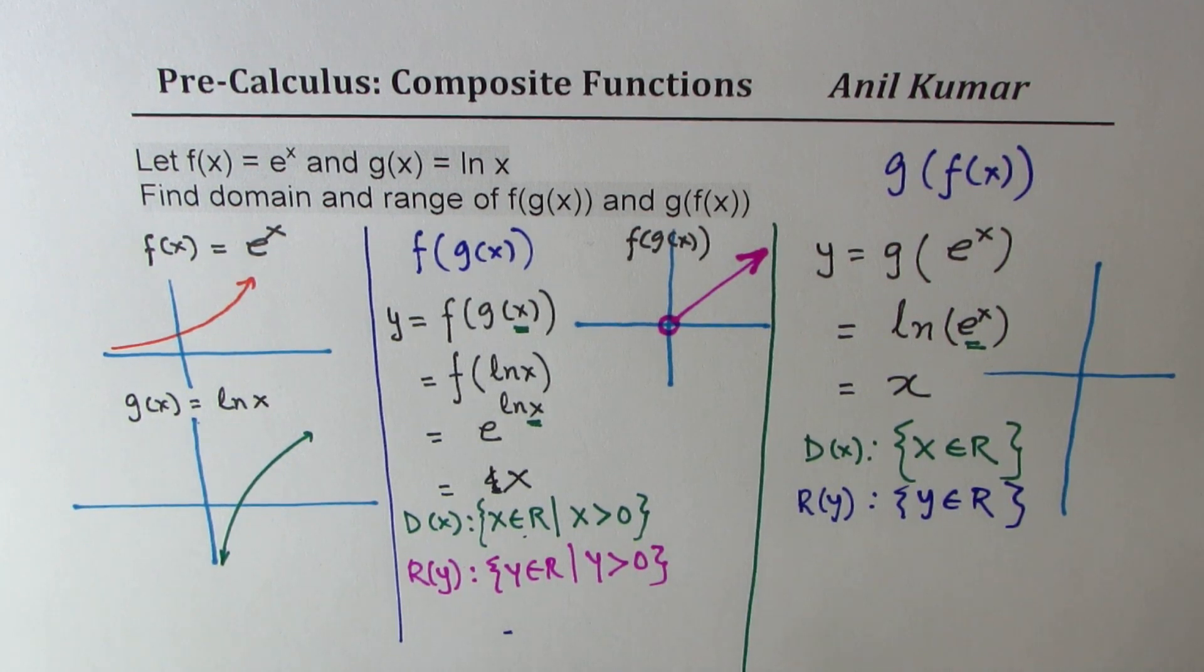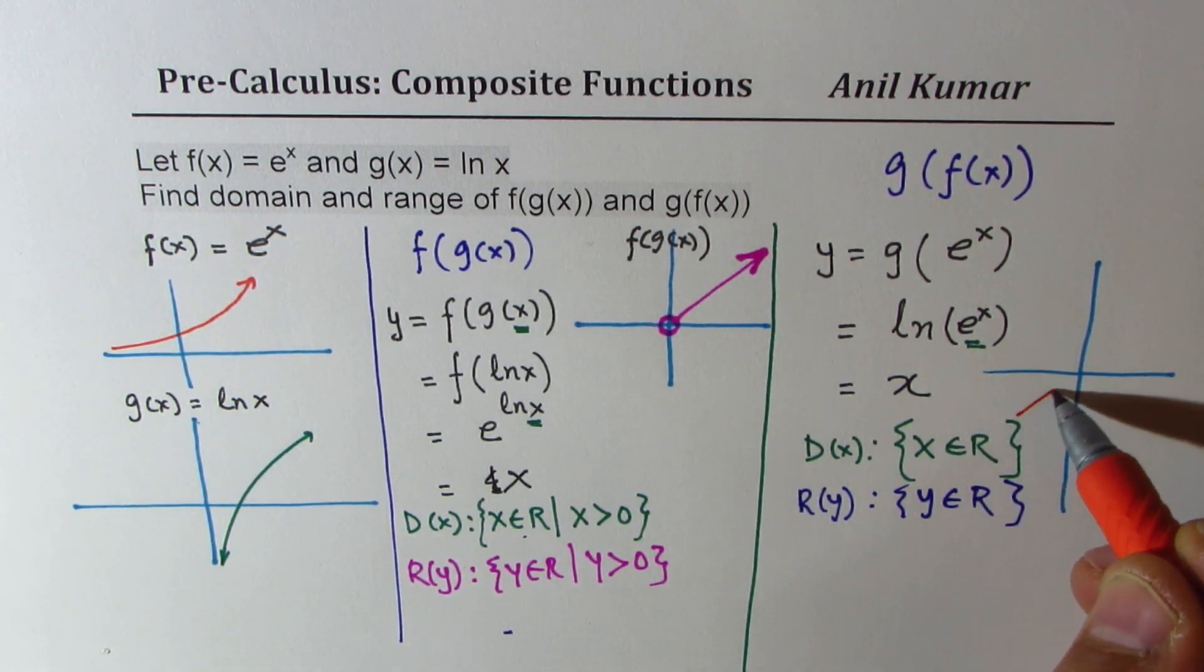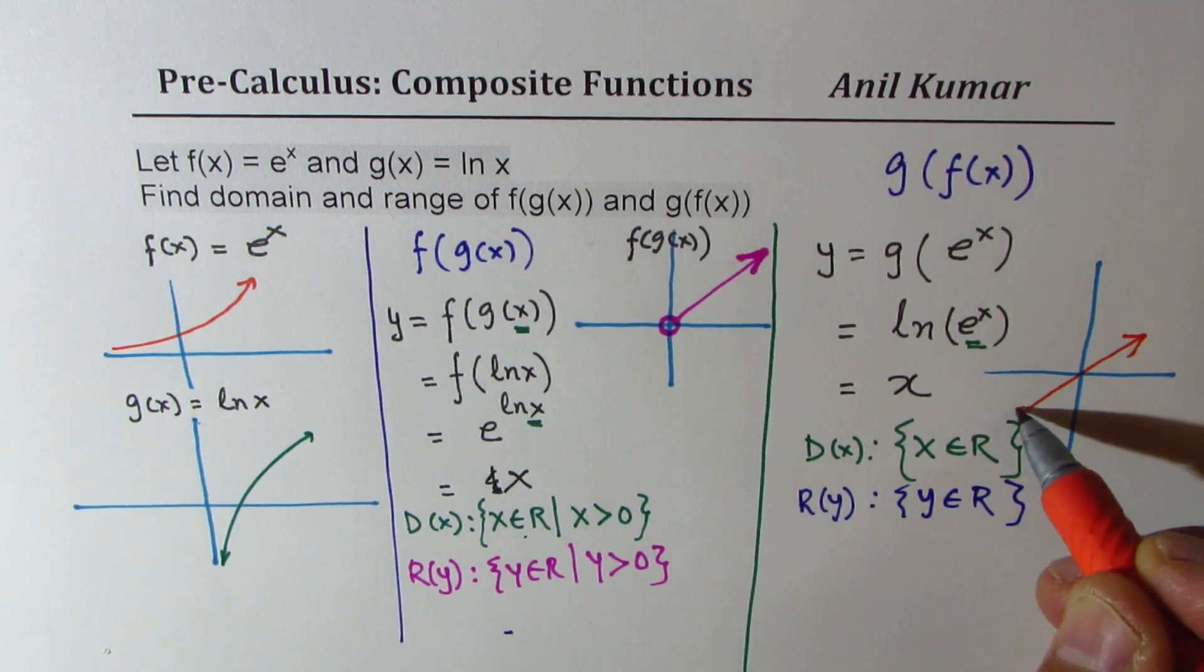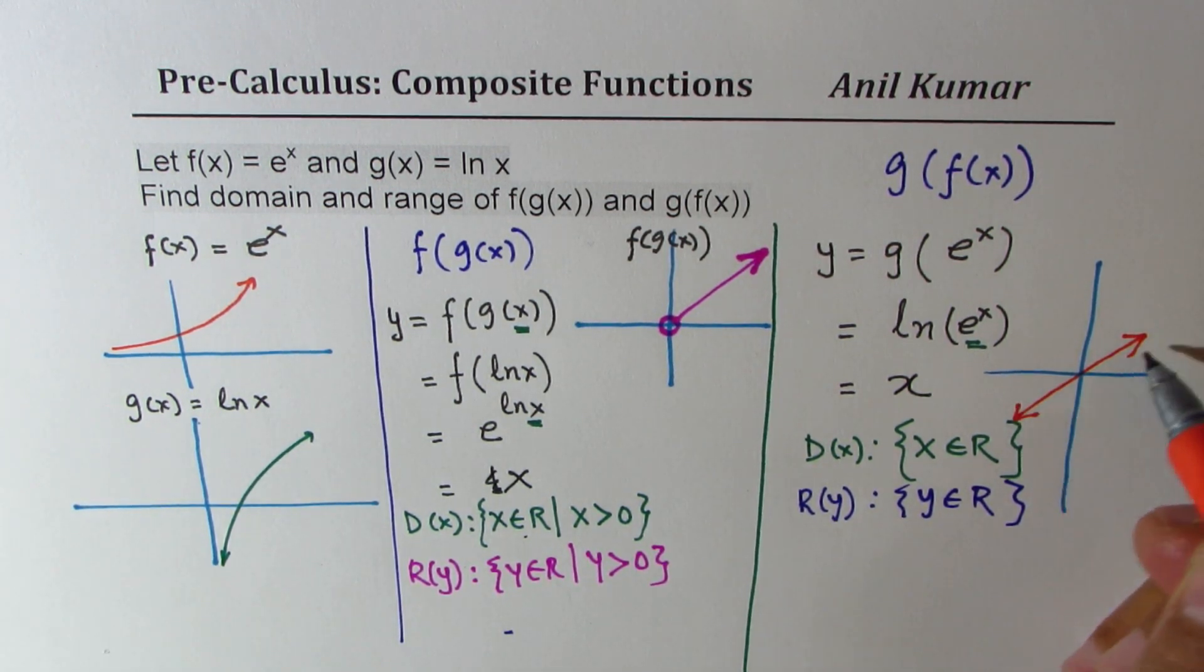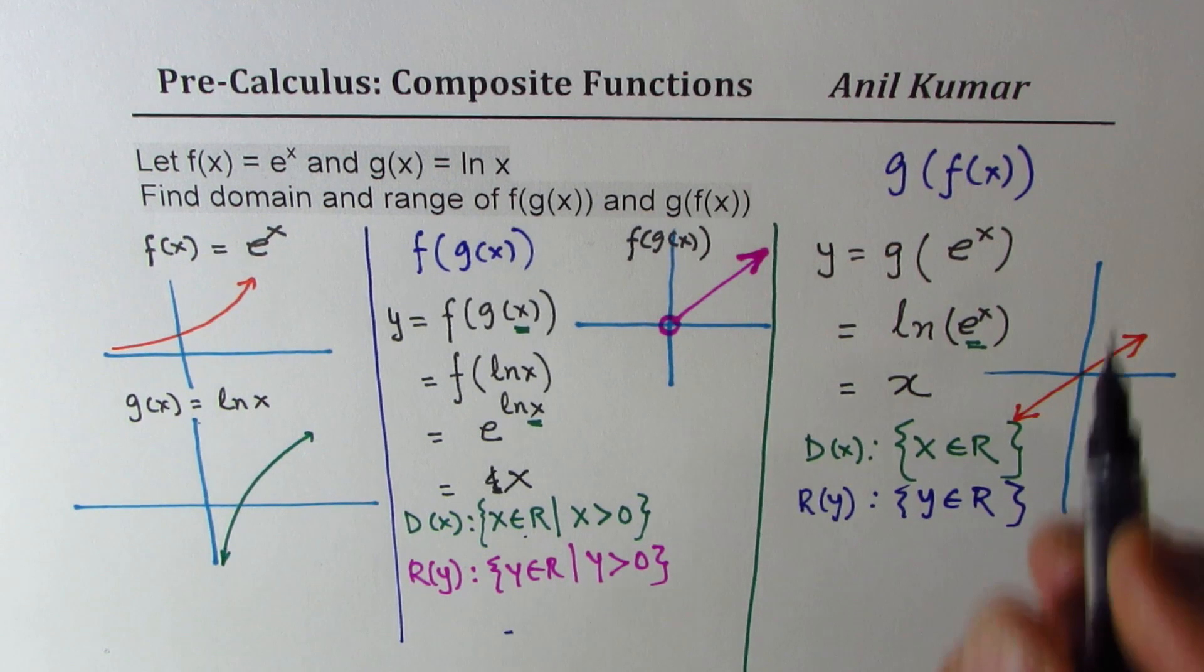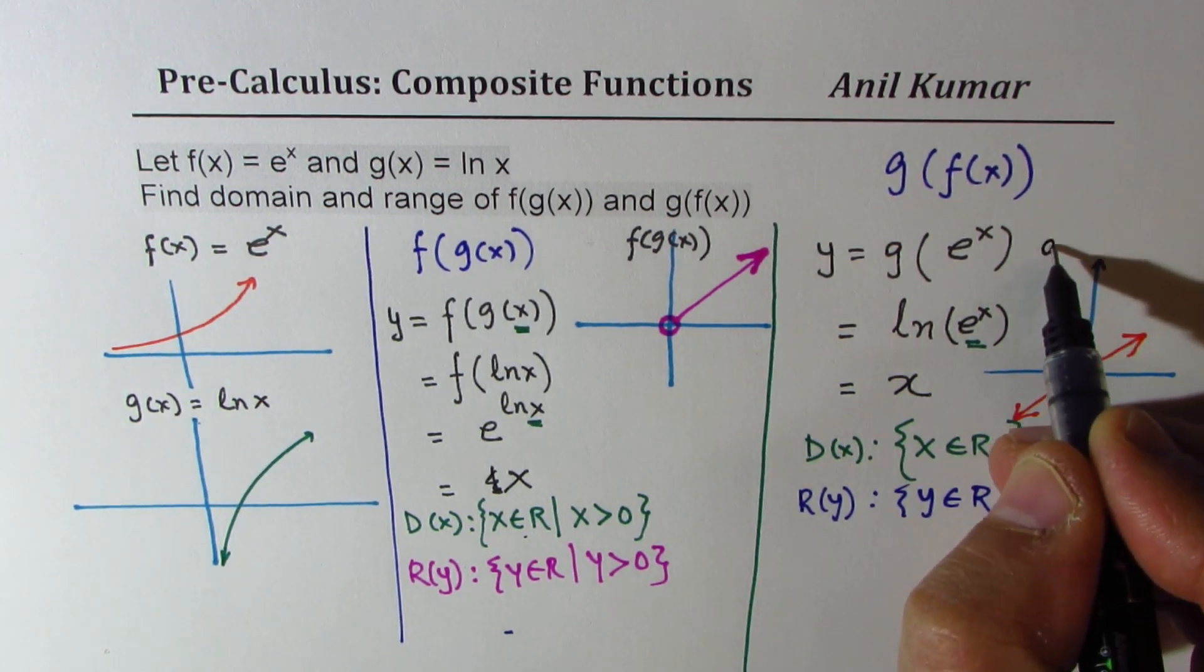What do we get? Well, in this particular case we have no restrictions, so we get the line which is y equals x. Do you see that part? So we get a line which is y equals x. So this is g(f(x)).